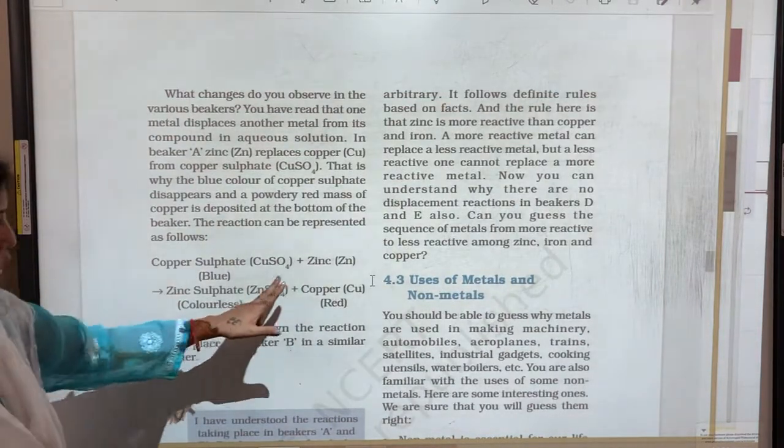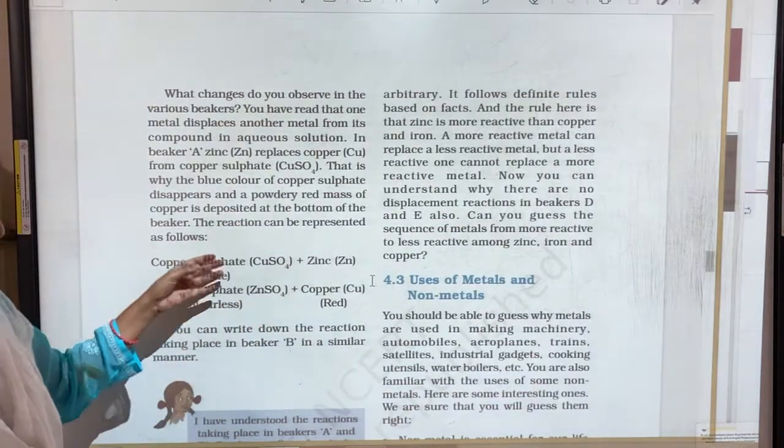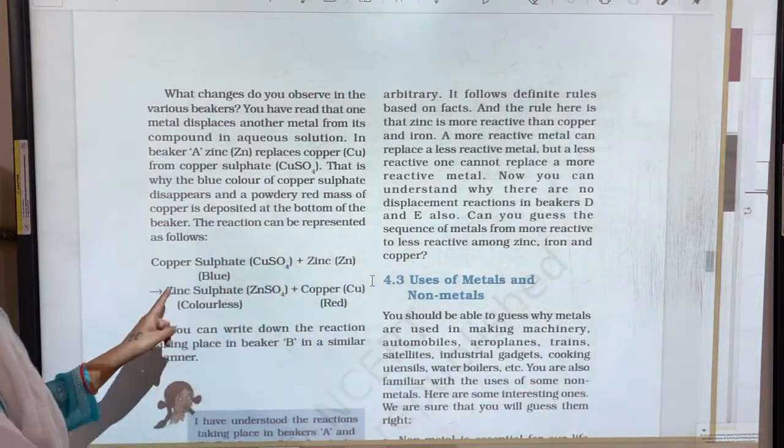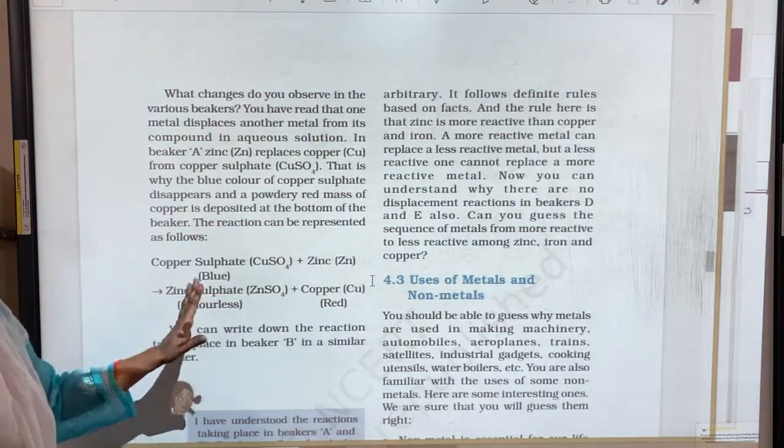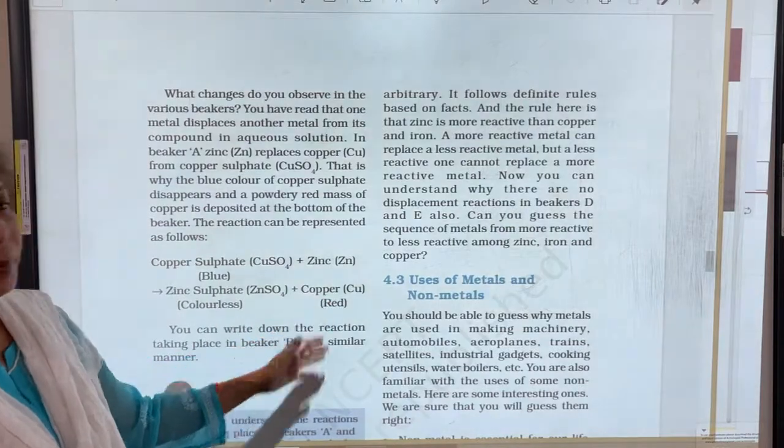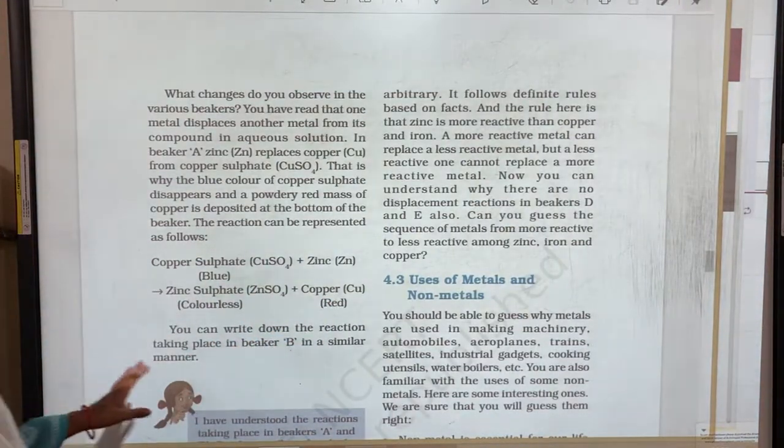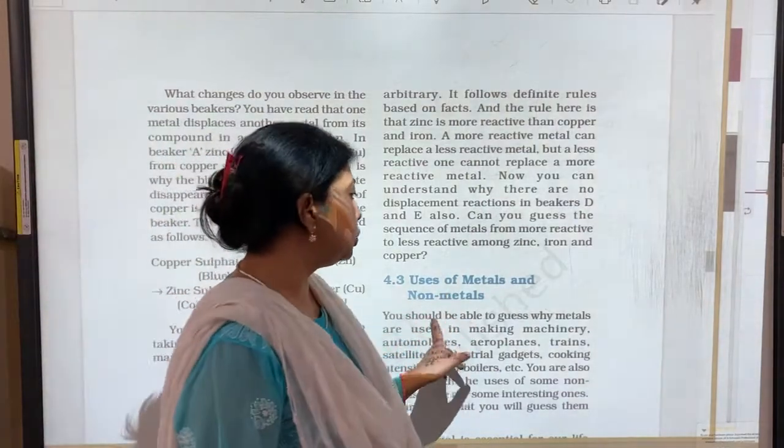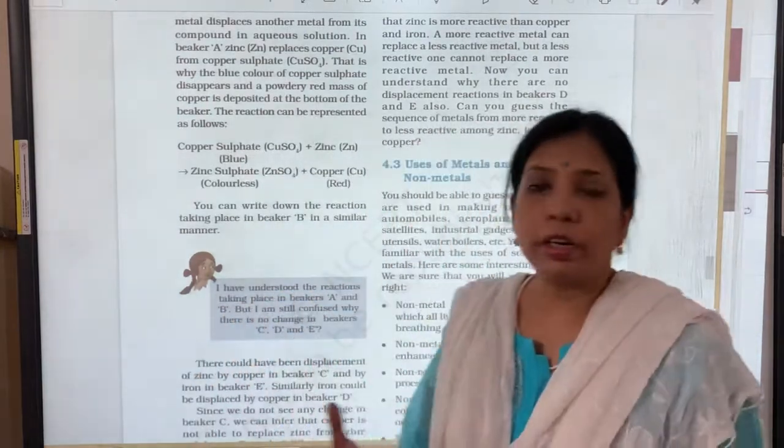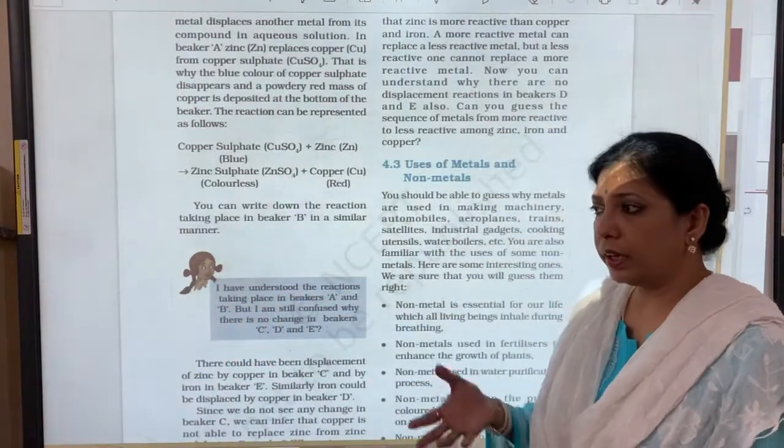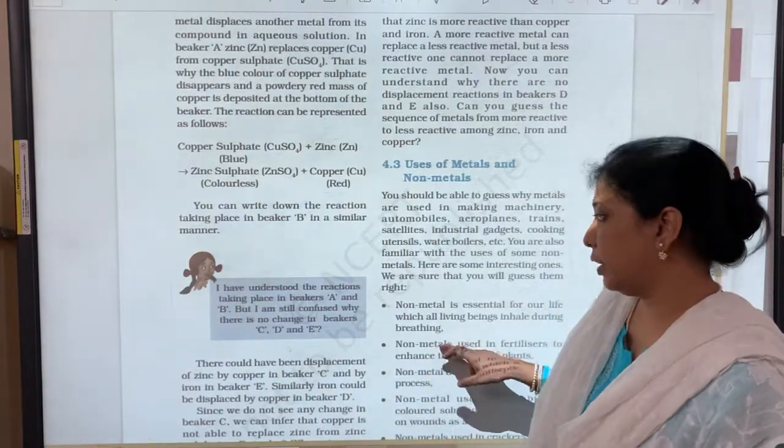The way we have written for copper sulphate and zinc, similarly we can write for copper sulphate and iron. We will get the iron sulphate and copper as a residue. So after this let us know about the uses of metals and non-metals. You know, you look around you, everything has metal into it.